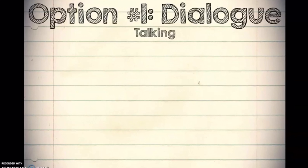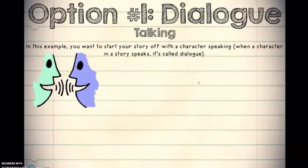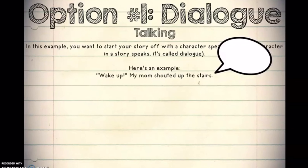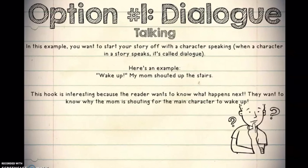The first option that we have is dialogue, where we see a character talking, possibly to another character or to the reader. Let's look at an example: "Wake up," my mom shouted up the stairs. Notice that you've got quotation marks around the 'wake up' part and then you're still describing what's going on.